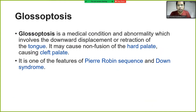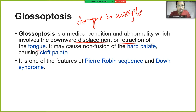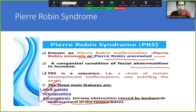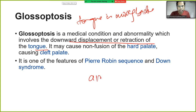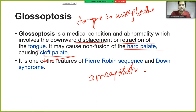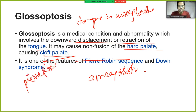Glossoptosis is a medical condition involving the downward displacement or retraction of the tongue, causing airway obstruction. This may also cause non-fusion of the hard palate, resulting in cleft palate — one of the features of Pierre Robin syndrome. Please remember the triad: cleft palate, glossoptosis, and retrognathia.